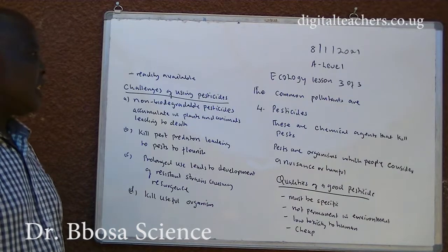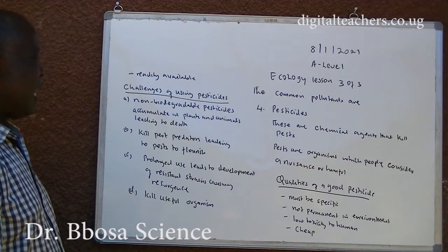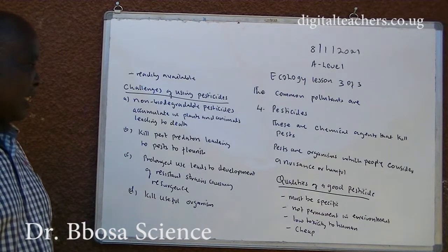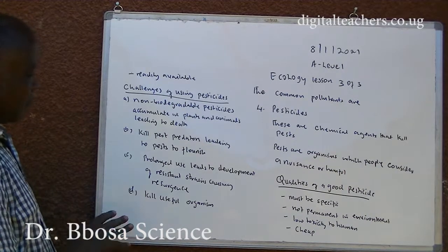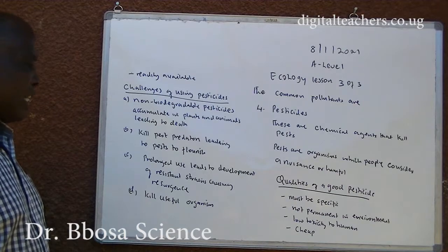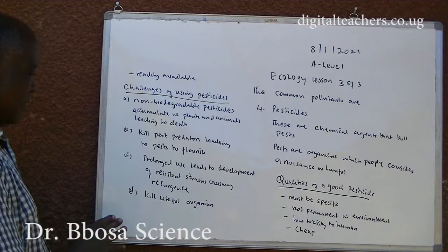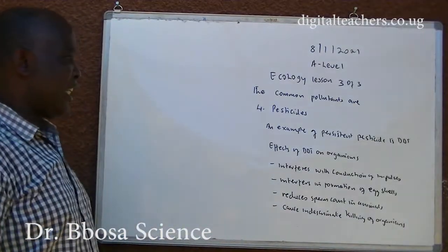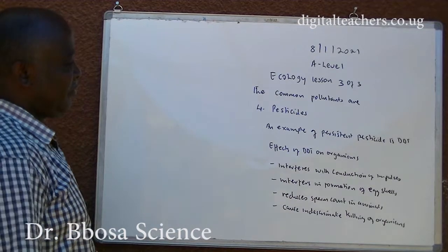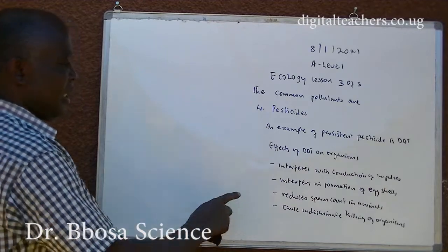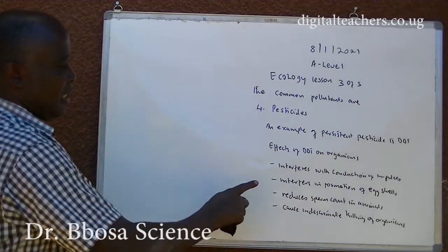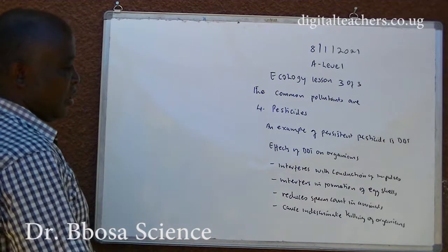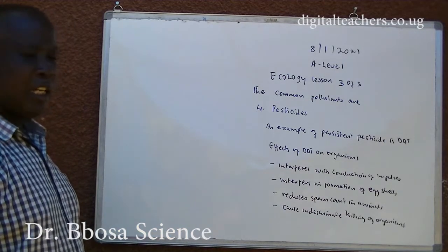Challenges of using pesticides: non-biodegradable pesticides accumulate in plants and animals, leading to death; they kill pest predators, leading to pests flourishing; prolonged use leads to development of resistant strains, causing resurgence; and they kill useful organisms. An example of a persistent pesticide is DDT. Effects of DDT on organisms: interferes with conduction of nerve impulses, interferes with formation of egg cells, reduces sperm count in animals, and causes indiscriminate killing of organisms.